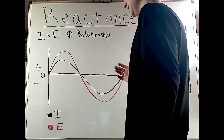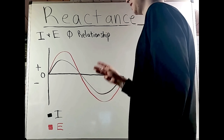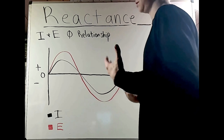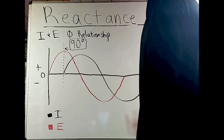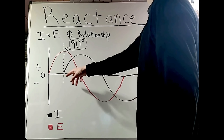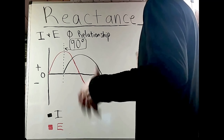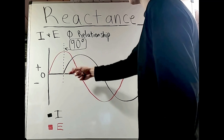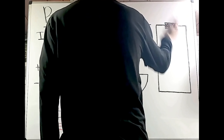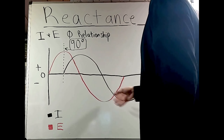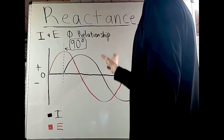Voltage and current starting and ending at the same time means they have the same frequency and are in phase, just with different magnitude. The three factors of a wave are magnitude, frequency, and phase. In a purely inductive circuit, current lags behind voltage by 90 degrees. This is because inductance slows down the current, adding a time constant. With no resistance — purely inductive — the current is 90 degrees behind the voltage.